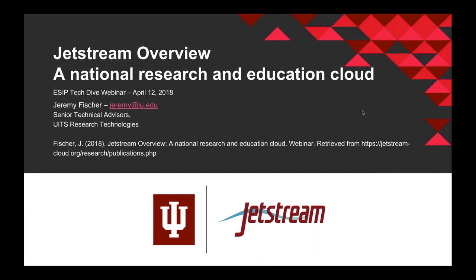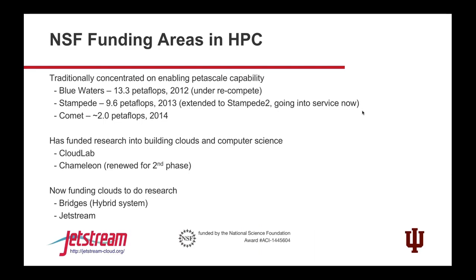We're going to cover Jetstream, which is the National Science Foundation's first production science and engineering cloud. Traditionally for HPC funding, the NSF has gone for more traditional HPC resources, concentrating on flops. You can see on the slide some of the things that have come along — the Track 1 and Track 2 grants that have come down over the last few years.